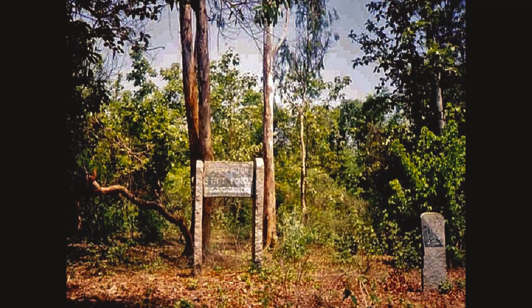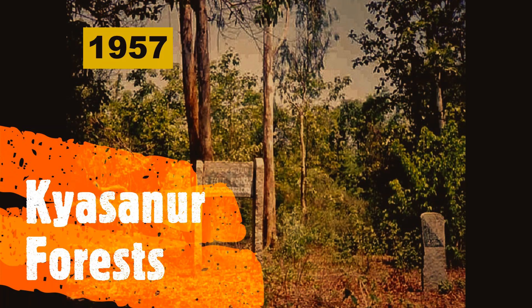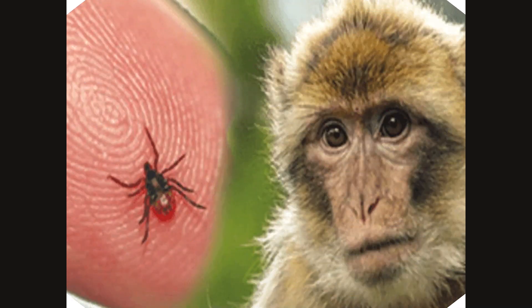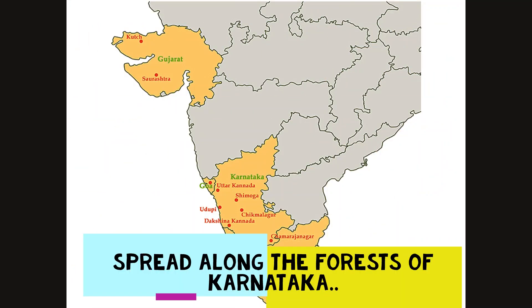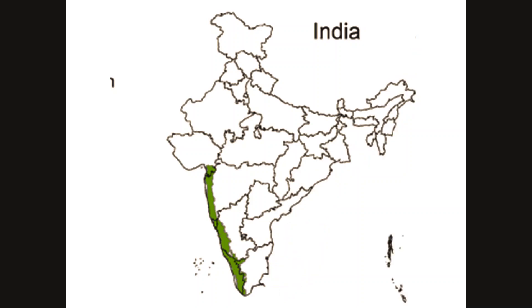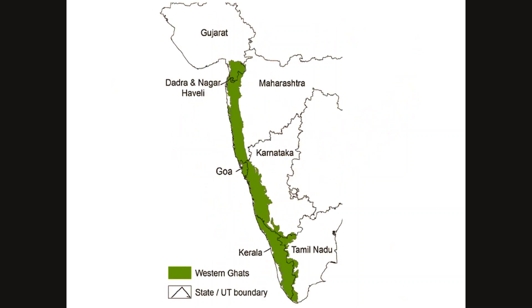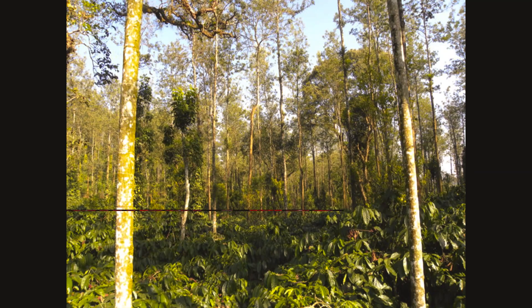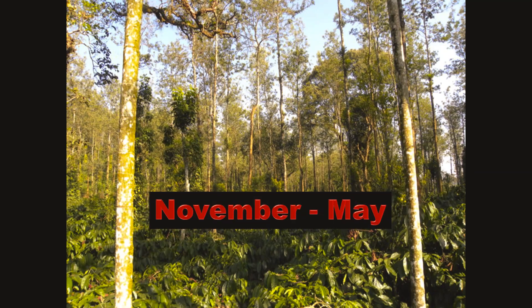Monkey Fever was identified in 1957 in Kyasanur Forest, Shivamogga district, Karnataka, India, and was isolated from a sick monkey. For decades it was confined to the forests of Shivamogga. In the last five years it has spread along the forests of Karnataka to neighboring states, especially the Western Ghats regions of Tamil Nadu, Kerala, Goa, and Maharashtra. The disease used to recur every year during the summer months, taking lives from communities residing in forest areas.